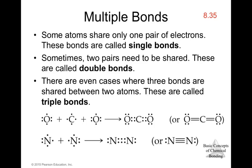For nitrogen gas, N₂, we share three pairs of electrons — a triple bond. That gives six shared electrons plus one lone pair on each nitrogen, for a total of eight electrons around each nitrogen, completing the octet rule for both atoms.